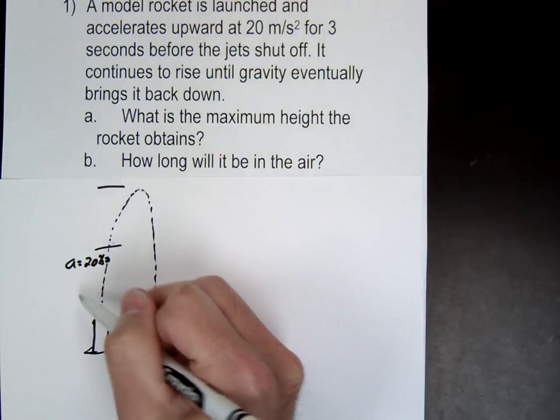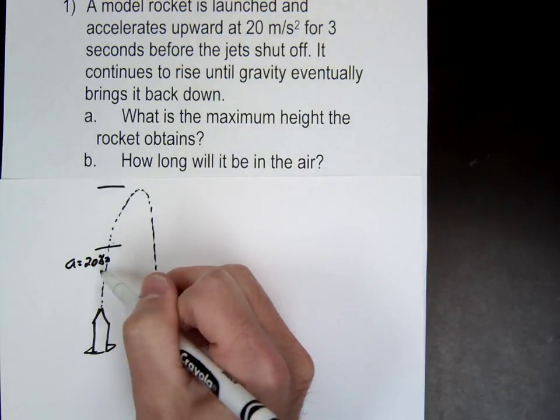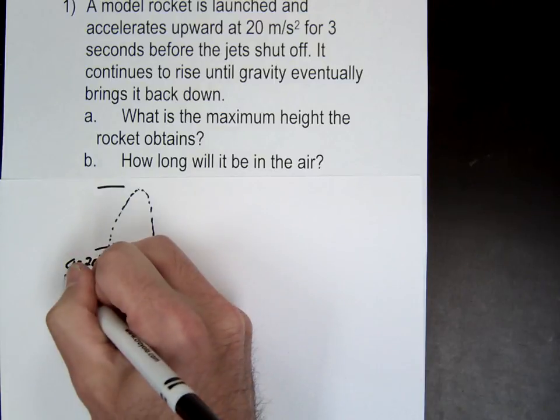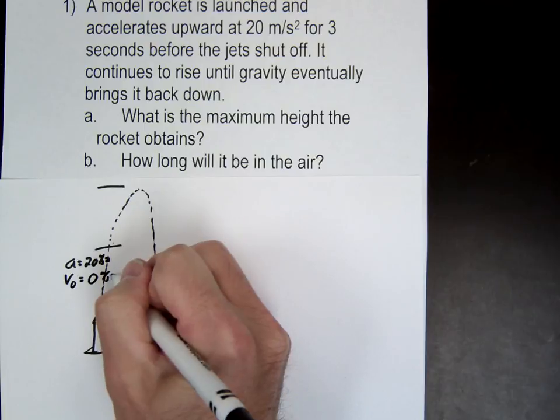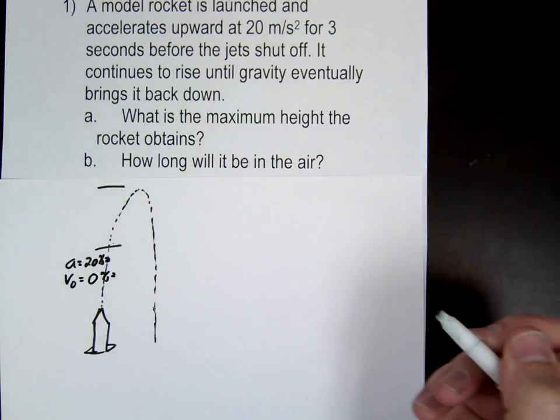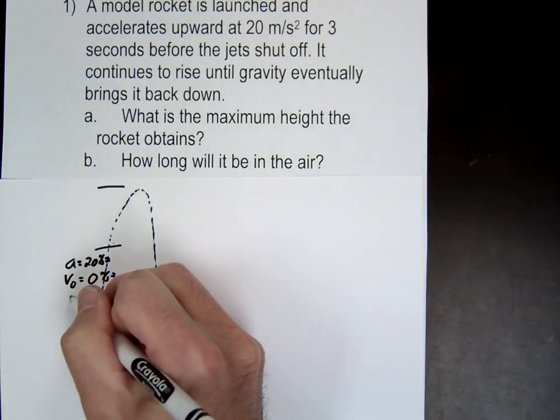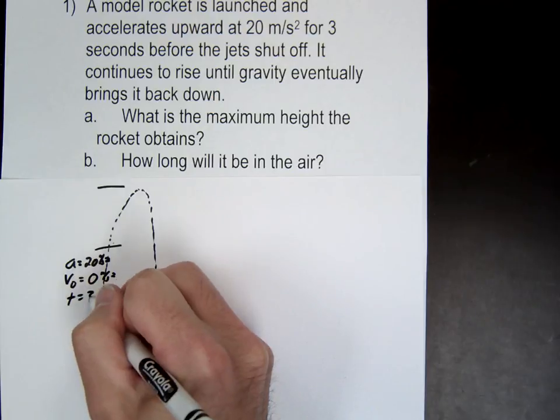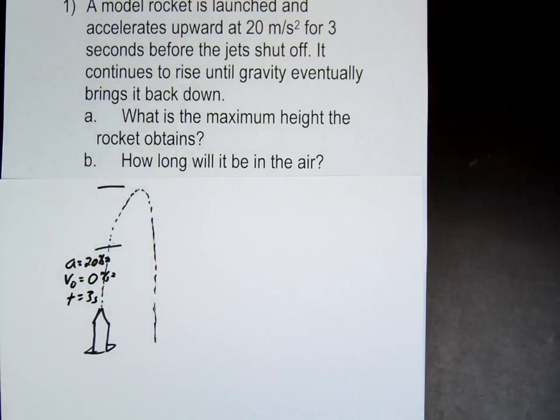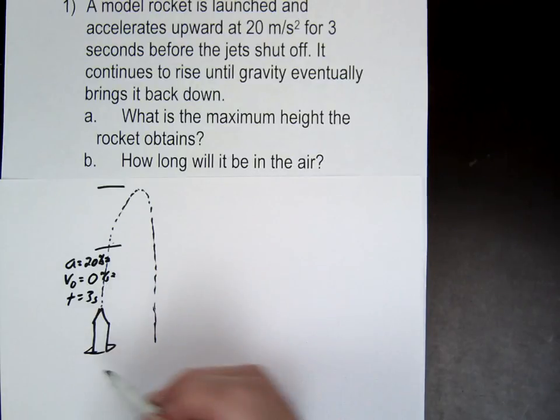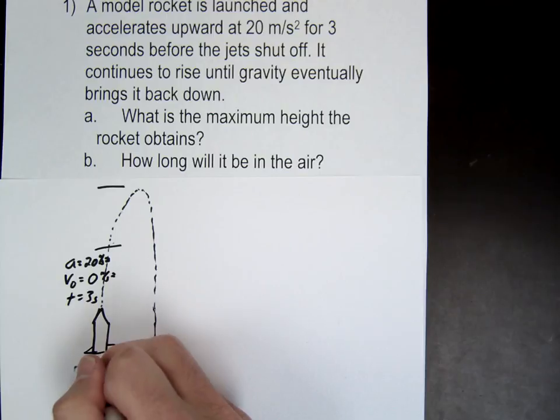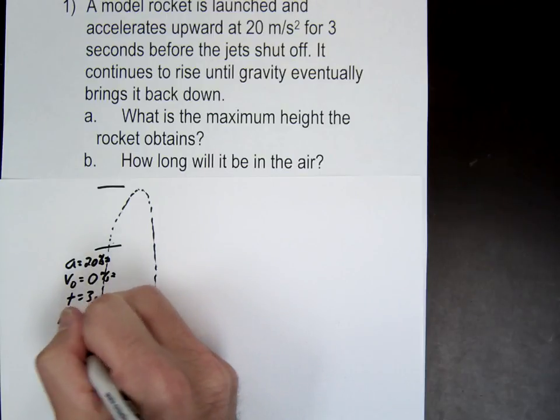So we're going to get our A. Let's do the givens for the first part. We know the A we just said is 20. What's the V initial? Zero, zero. And then what's the other unknown? Or what's the other known? Time, time. Okay, it said it's going to accelerate for 3 seconds, right? So there's our 3, and hopefully I think most of you at least got to that point, and you used your equation and you found delta D.